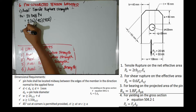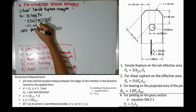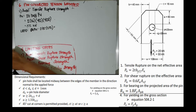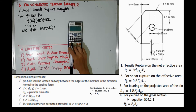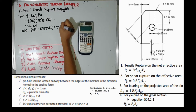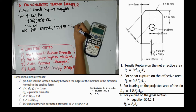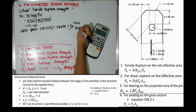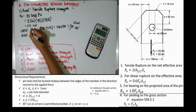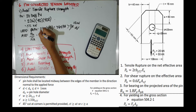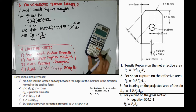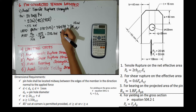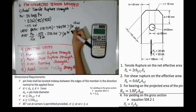Under LRFD, phi equals 0.75, so the available tensile rupture strength is 0.75 × 512 = 384 kN, which is greater than the required PU of 112 kN — OK. Under ASD, dividing the nominal tensile strength by the safety factor of 2.0 gives 256 kN, which is greater than the required 75 kN — OK.